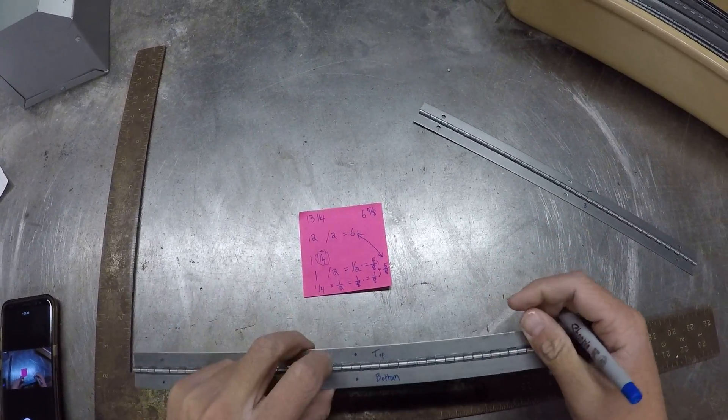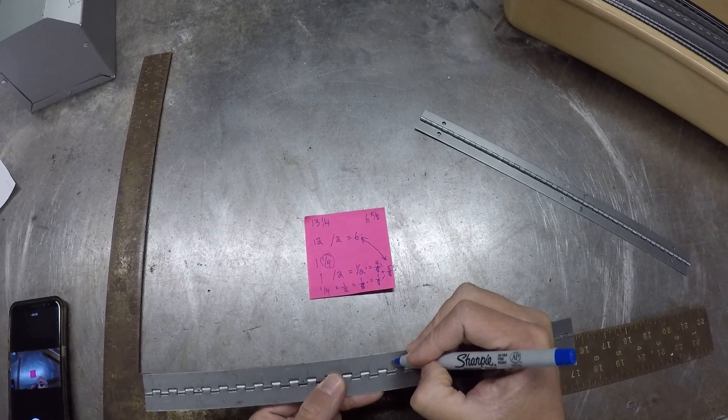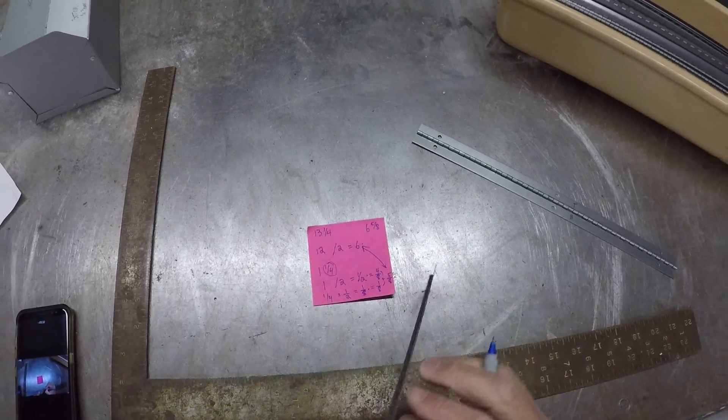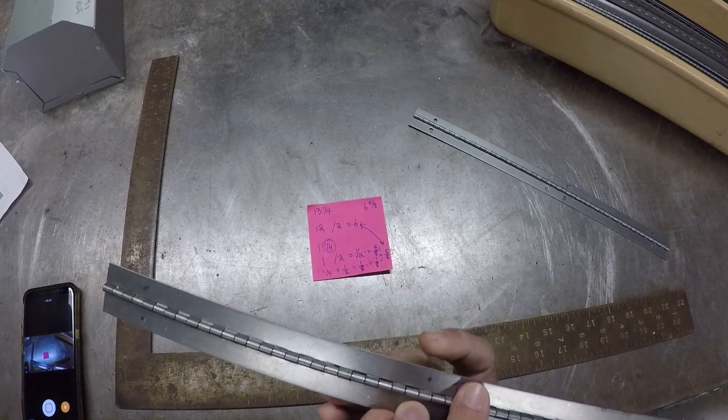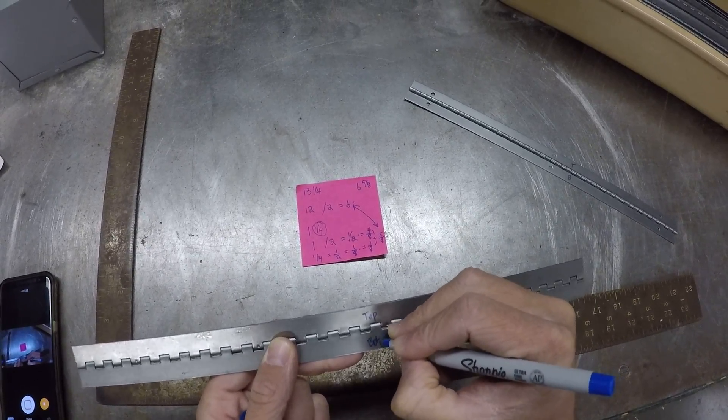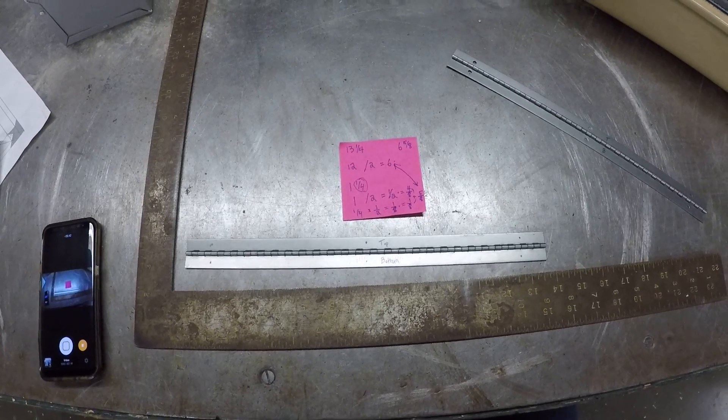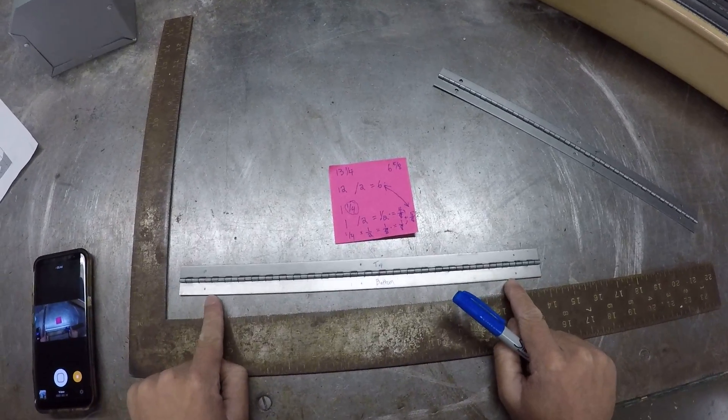And then I want to flip this over and I want to label the same thing on the opposite side. Top lines up with the top on here and bottom.